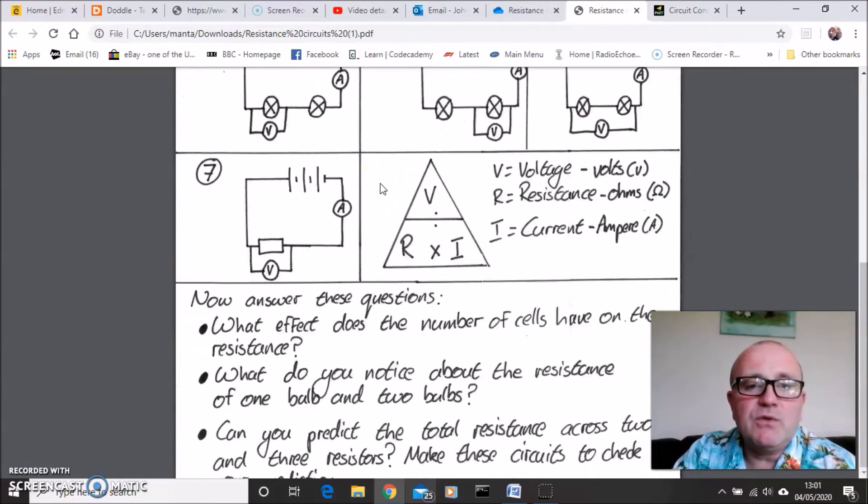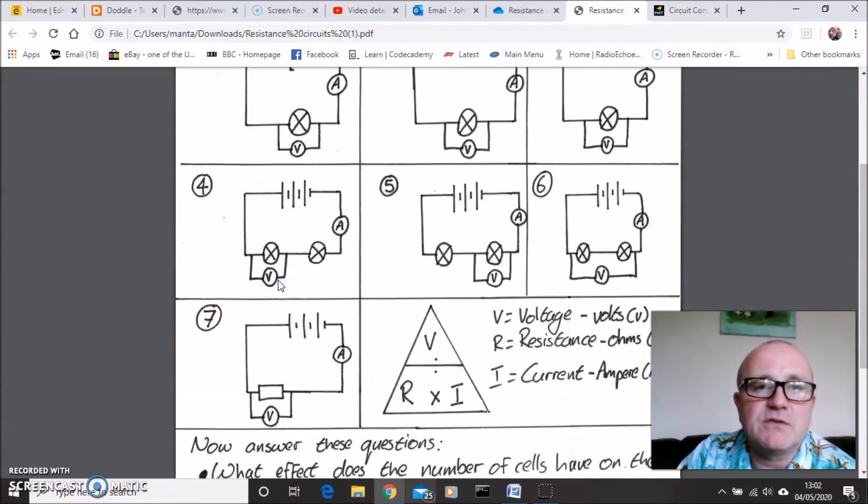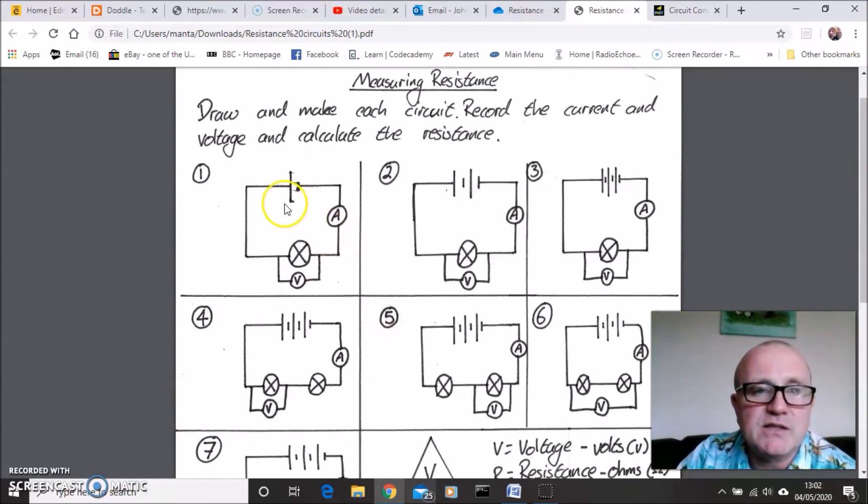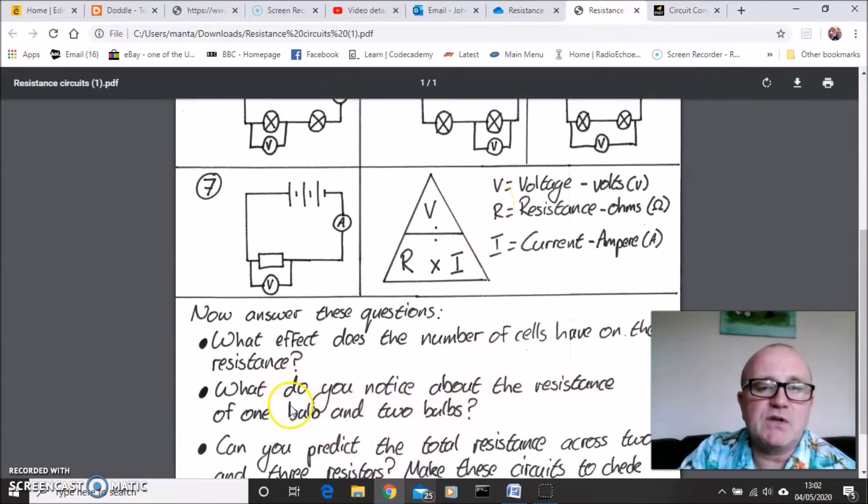I would like you then please to consider these three questions. So what effect does the number of cells have on the resistance? Because if you have a little look, you'll notice that circuits one, two and three are all identical. The only difference is that we are increasing the number of cells. What do you notice about the resistance of one bulb and two bulbs?